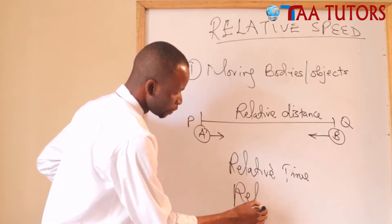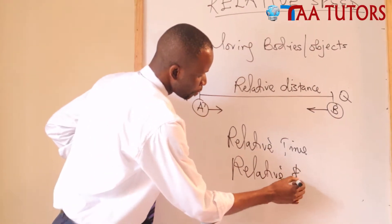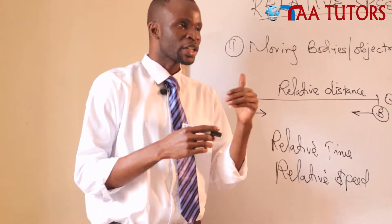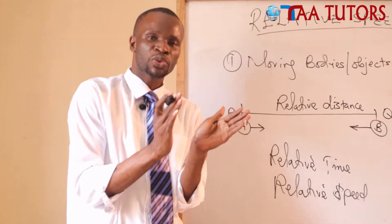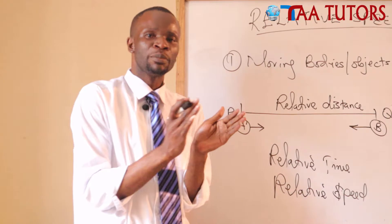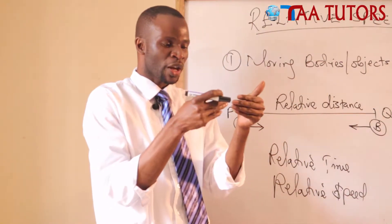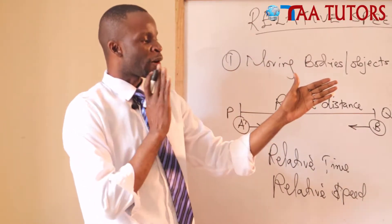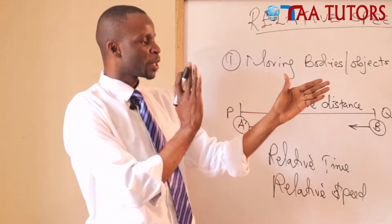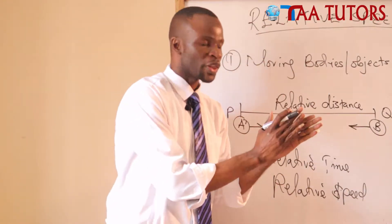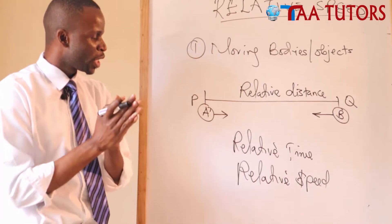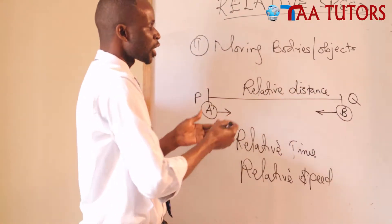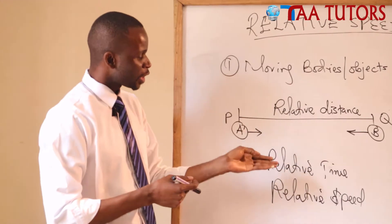Then we have relative speed. Relative speed is the rate at which the distance between two objects is diminishing. Whether they are moving towards each other — the distance is bigger at the start but will reduce until they meet — or moving in the same direction where the faster one behind reduces the gap until they come together. So relative speed is the speed at which moving objects cover the distance between them. We have relative distance, relative time, and relative speed.